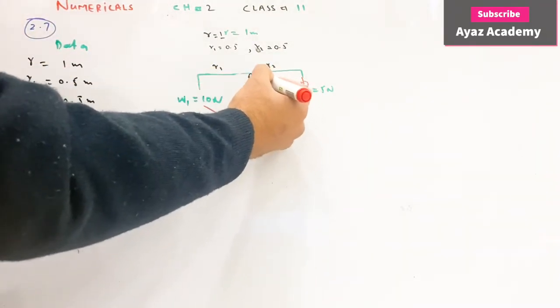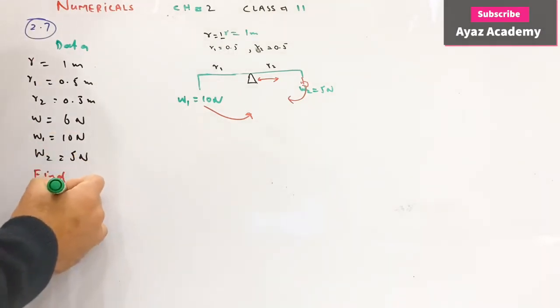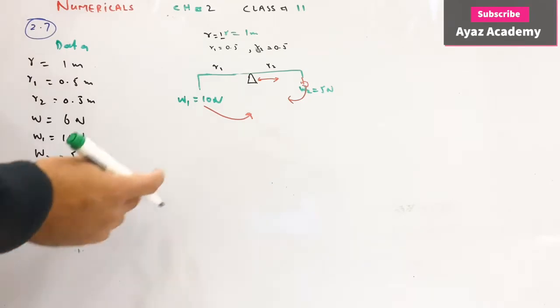Is position ko humne find karna hai, matlab is distance ko, jis ko hum naam dete hai R1, R2 aur R3. R3 wo position hai jidhar yeh balance hoga. Toh hum R3 find karna hai.